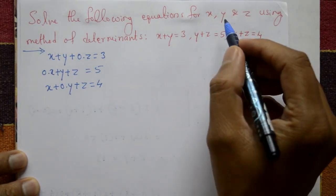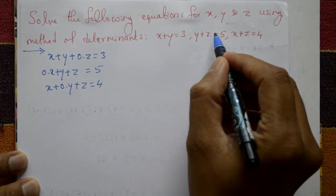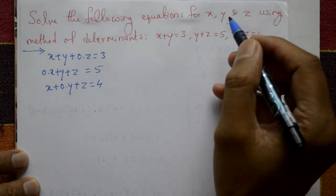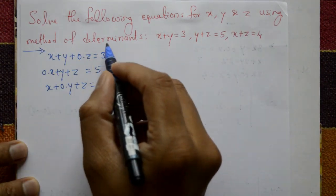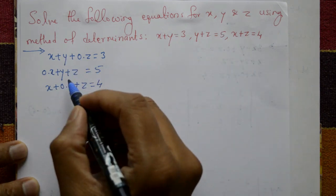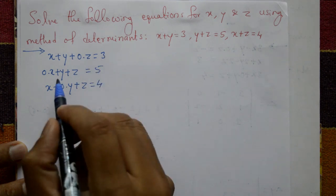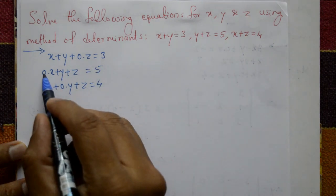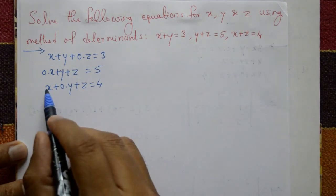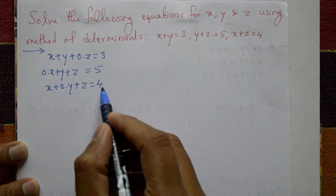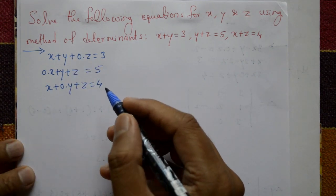We will solve the following equations for x, y, z using the method of determinants. The equations are: x plus y (no z variable, so 0 into z) is equal to 3. In the second equation, x is not mentioned, so 0 into x plus y plus z is equal to 5. The third equation, y is not mentioned, so x plus 0 into y plus z is equal to 4.